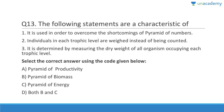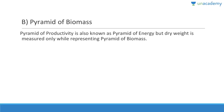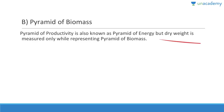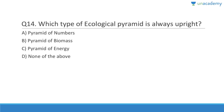Question thirteen: This pyramid is used to overcome the shortcomings of the pyramid of numbers. Individuals in each trophic level are weighed instead of counted. Since they are talking about weights, the answer is pyramid of biomass. It is determined by measuring the dry weight of all organisms occupying each trophic level. Note: pyramid of productivity is also known as pyramid of energy, but dry weight is measured only while representing pyramid of biomass.